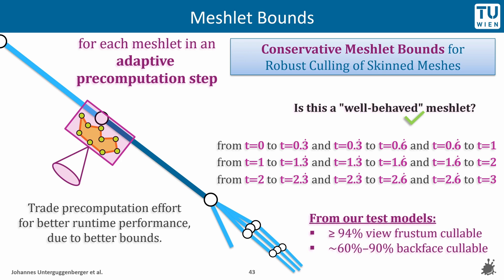In our tests, we were able to identify for different 3D models that usually 94% of meshlets or more are at least suitable for view frustum culling, with the quality criterion that their bounds do not grow more than 3-fold compared to their initial bounds. With regard to backface culling, around 60–90% of meshlets ended up with usable normal distributions which deviate at most by 30 degrees from a mean normal direction, while this percentage can be increased with additional computational effort in the precomputation step.